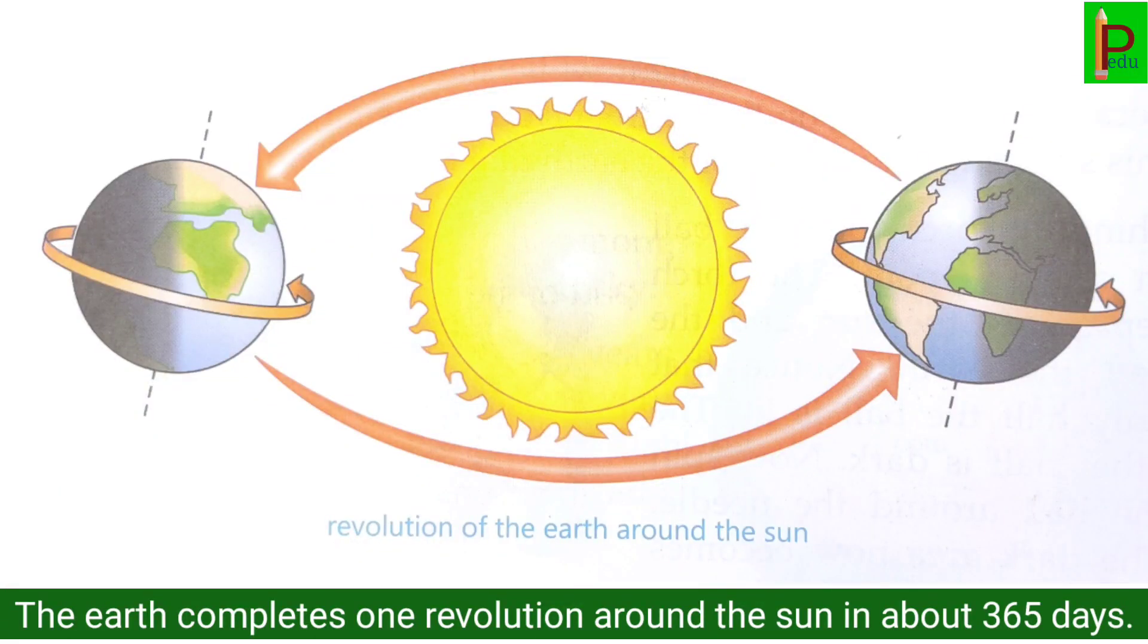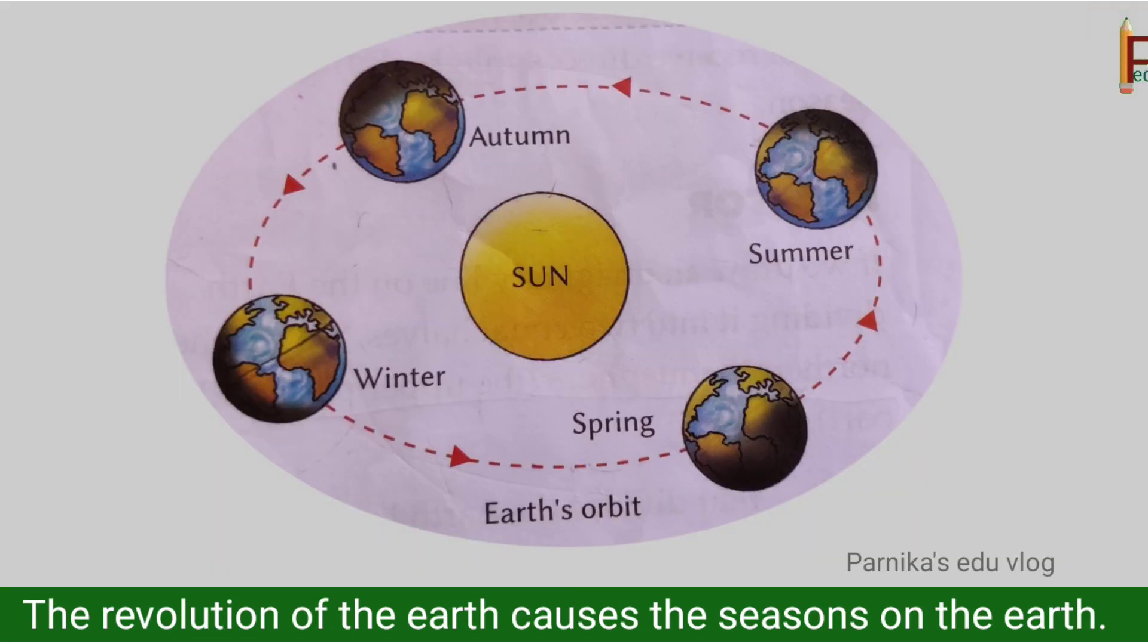Children, the earth completes one revolution around the sun in about 365 days. The revolution of the earth causes the seasons on the earth.